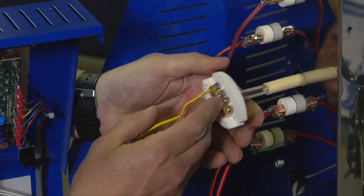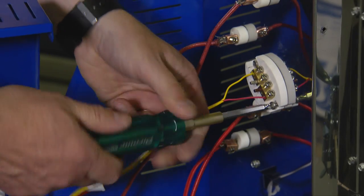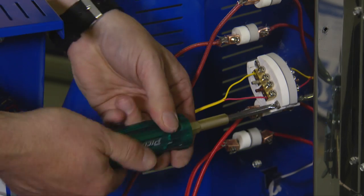Push the thermocouple back into the kiln and replace the two quarter-inch screws.